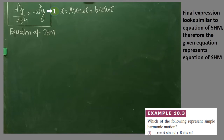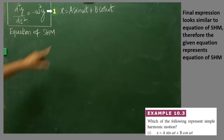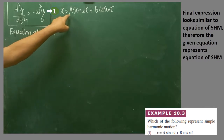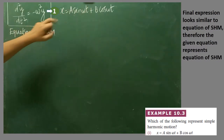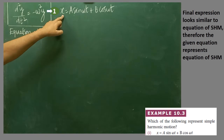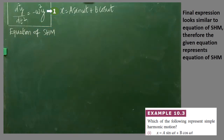We are going to solve the problem given in Chapter 10, page number 195, example number 10.3. The equation given is x = a sin(ωt) + b cos(ωt). We have to check whether this equation represents simple harmonic motion or not.